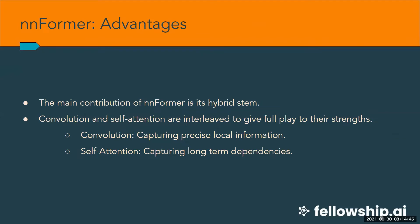The main contribution of Informer is its hybrid stem where convolution and self-attention are interleaved to give full play to both their strengths — meaning the network benefits from the precise local information encoded by convnets and from the long-term dependencies and global context encoded by the self-attention mechanism. Compared to transformer-based stems, Informer inherits the superiority of convolution in encoding spatial information and producing hierarchical representations that help model object concepts at various scales.